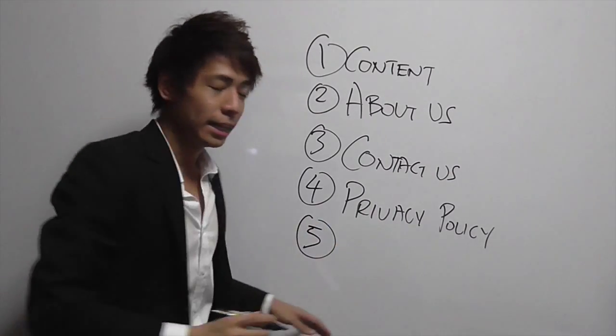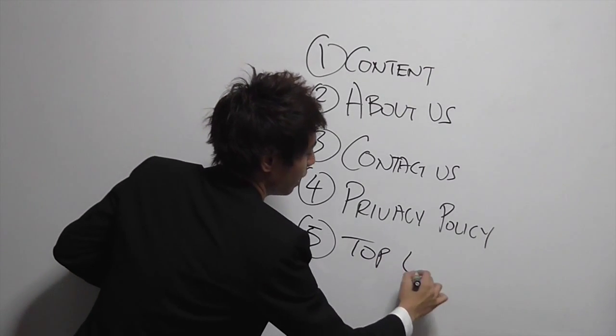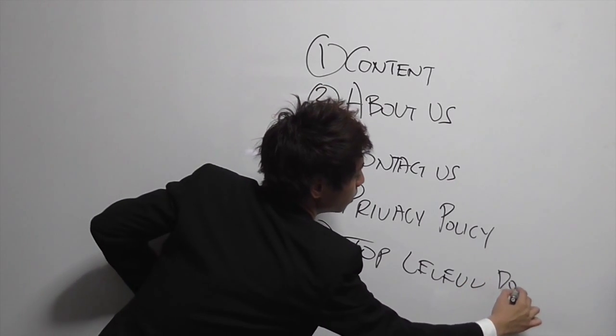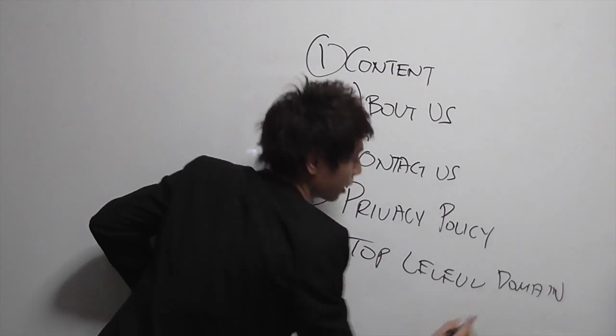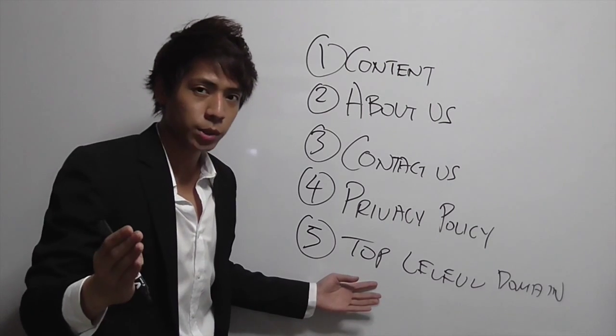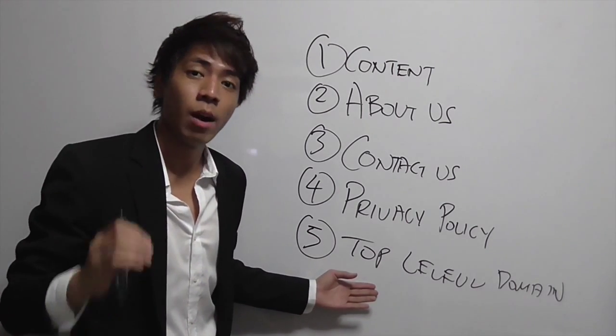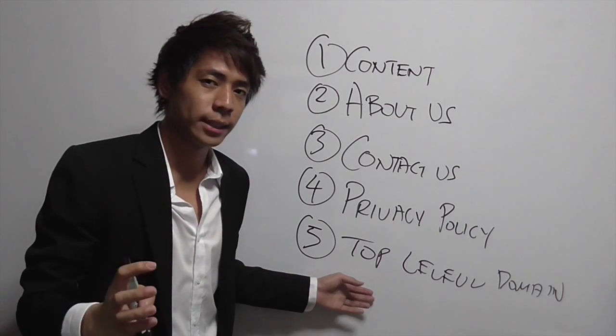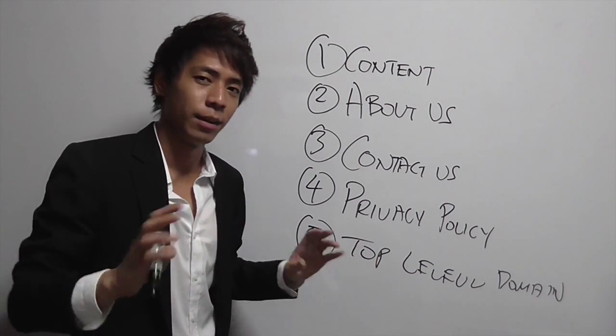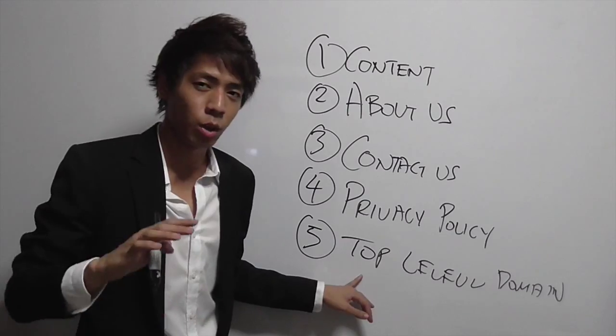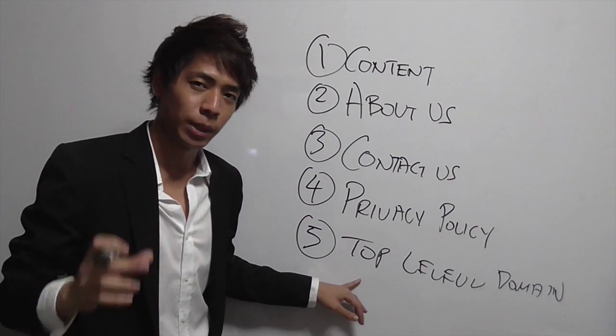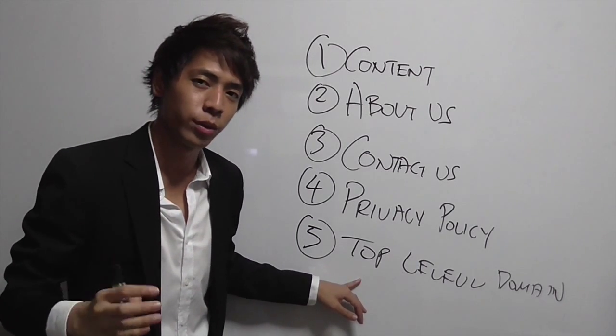The fifth one is actually Top Level Domain. What that means is if you have a .com website as well as a .net website, it will help increase your chances of getting your Google AdSense account approved even more. So a .com or .net, not like a free kind of domain like .wordpress or .blogspot. Having a .com or .net is much better and you will get your account approved much more.